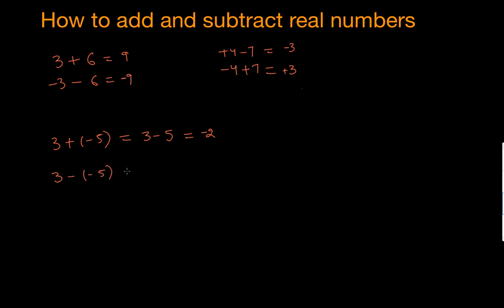Let's do one more: 3 minus negative 5. A minus multiplied by a minus gives positive, so this becomes 3 plus 5. Both signs are the same — we add them, and the signs are positive, so the answer is positive 8. Remember: when both signs are opposite they give negative; when both signs are the same they give positive.